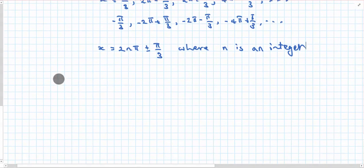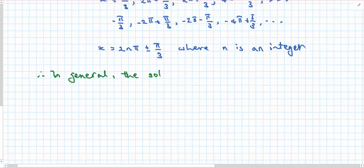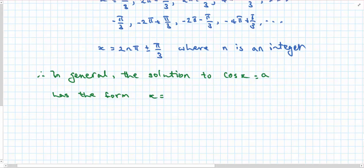So again we can write the general statement. Therefore, in general, the solution to cos x equals A has the form x equals 2nπ ± α, where n is an integer.